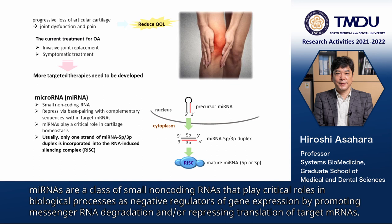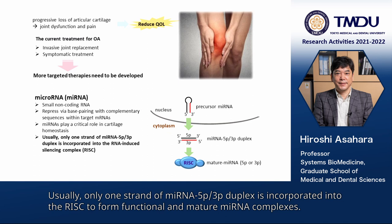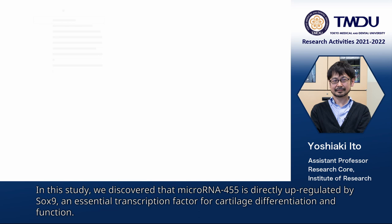MicroRNAs are a class of small non-coding RNAs that play critical roles in biological processes as negative regulators of gene expression, by promoting messenger RNA degradation or repressing translation of target messenger RNAs. Usually, only one strand of the microRNA 5P and 3P duplex is incorporated into the RISC to form functional and mature microRNA complexes.